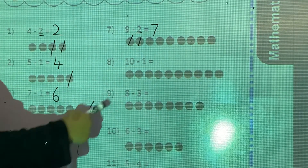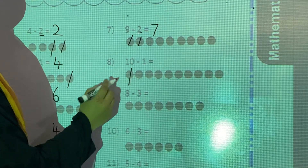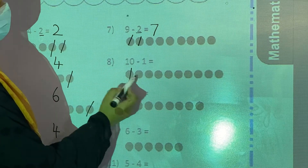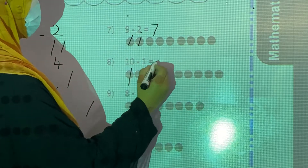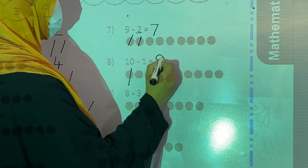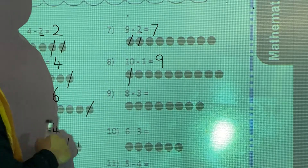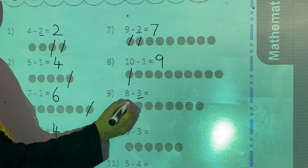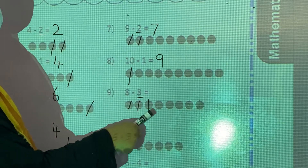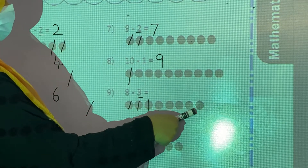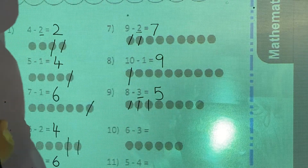Now 10 minus 1. These are 10 dots — you have to cut 1. How many are left? Count: 1, 2, 3, 4, 5, 6, 7, 8, 9. So 10 minus 1 is equal to 9. Now 8 minus 3 — you have to cut 3 dots: 1, 2, 3. How many are left? 1, 2, 3, 4, 5. So 8 minus 3 is equal to 5.